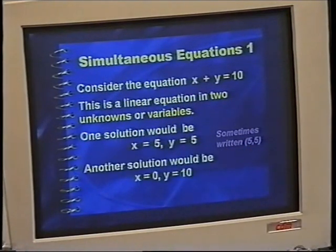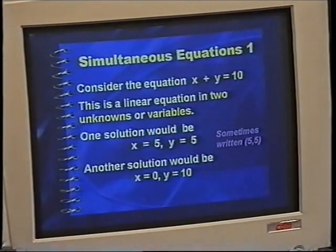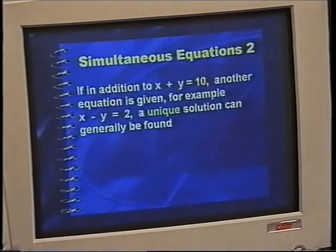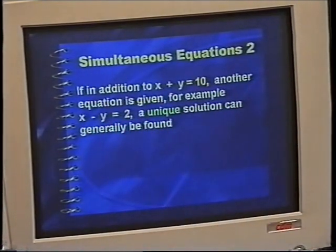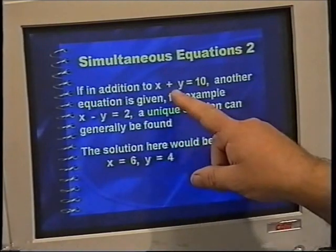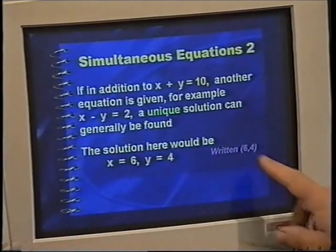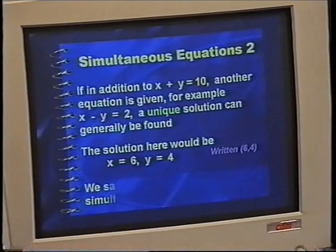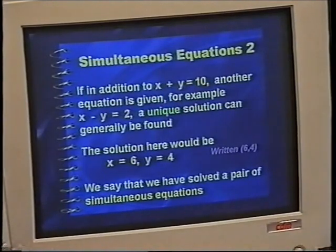There are other solutions, and I've got another one there, 0 comma 10. Also, those two numbers add up to 10. So, we don't see a unique solution for x and y. However, if I now introduce another equation like this one, x minus y equals 2, there generally will be a unique solution. And in fact, in this case, the unique solution is x equals 6 and y equals 4. You can check that. 6 plus 4 is 10, and of course, 6 minus 4 is equal to 2. Notice again this way the solution is written as an ordered pair. What we say is that we've solved a pair of simultaneous equations.